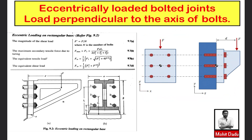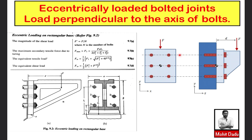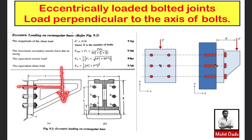Looking at the right figure, you can see a bracket — its front view and side view are shown. The bracket is fixed to the wall by means of three rows of bolts, with two bolts in each row. The axis of the bolt lies in one direction and the load acts perpendicular to it — this is the eccentric loading case. The required equations are found in the data book at equation 9.7 and figure 9.2.